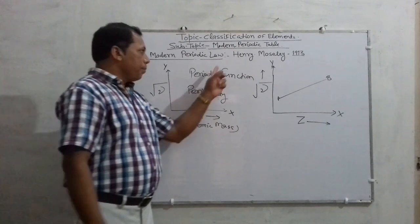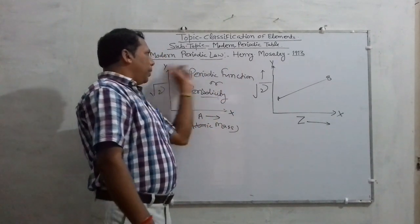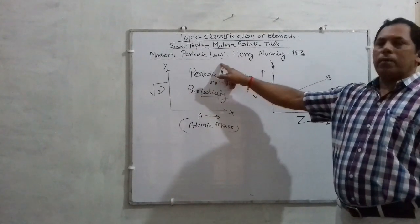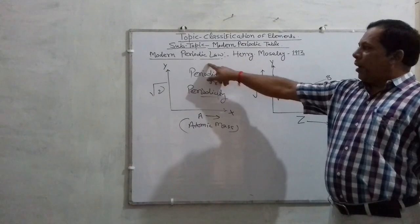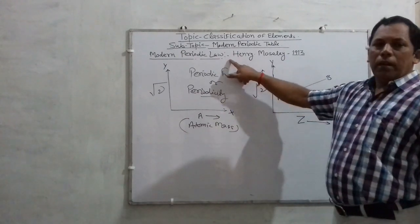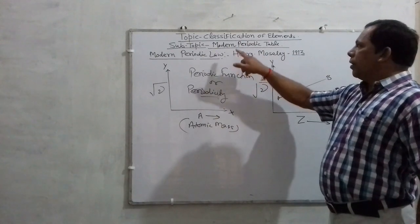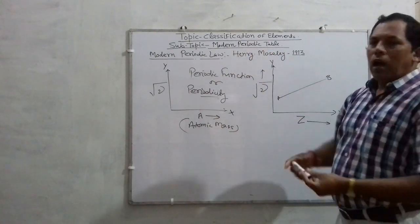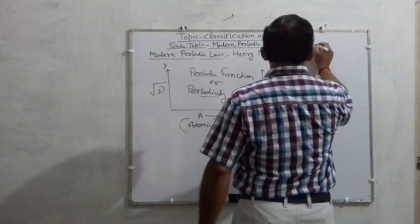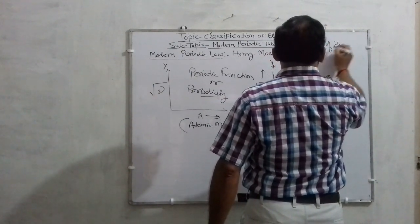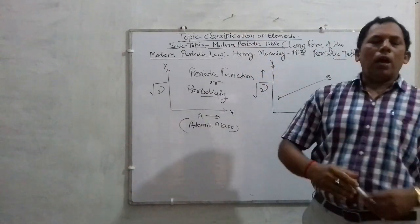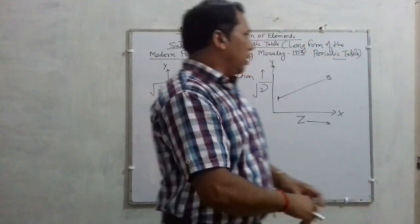According to this Modern Periodic Law, the elements were arranged in the increasing order of their atomic number. On the basis of increasing order of atomic number, a table was obtained and that table was called the Modern Periodic Table, also called the long form of the periodic table, which is completely based on the increasing order of atomic number.